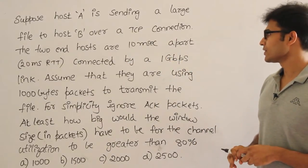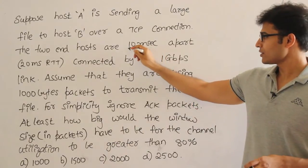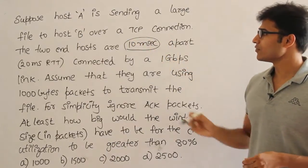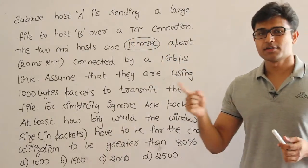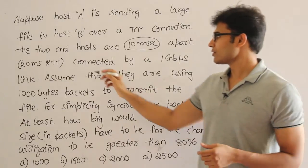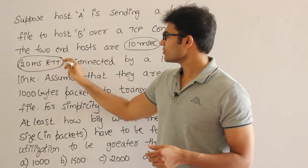The two end hosts are having 10 mbps links and the two ends are 10 milliseconds apart, which means the propagation delay between both of them is 10 milliseconds. Therefore 20 milliseconds is the round trip time.